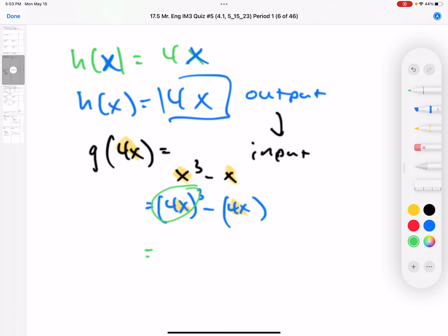Remember, 4x to the third is 4x three times. So 16 times 4 gives us 64x to the third minus 4x. These are not like terms so this is our answer.